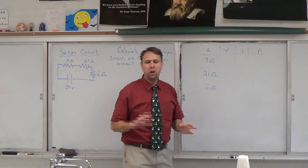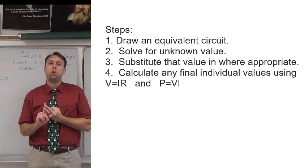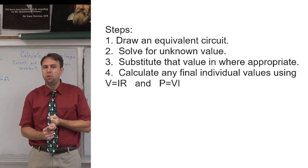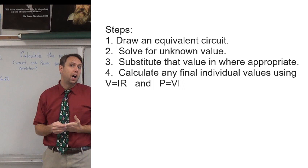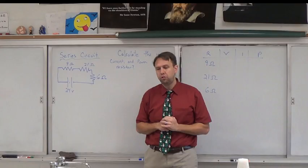So what are the steps we're going to follow? First, we're going to draw an equivalent circuit. We're going to use the equivalent circuit to calculate our unknown value, in this case current. We're going to then use that value to substitute in for our circuit and solve for any other unknown values. Calculate the power using power equals voltage times current.